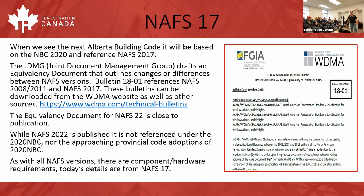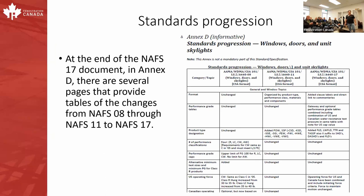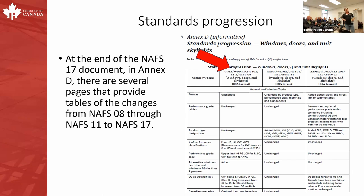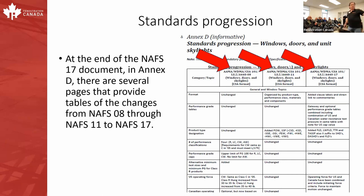With all NAFS versions there are component hardware requirements. What I'm talking about today is strictly out of NAFS 17 — there could be changes from 11 or 22, but 17 is the one that'll be referenced in the building code. Interestingly, the JDMG does equivalency documents, but at the back of NAFS there are actually standards progression tables. At the end of NAFS 17 in Annex D there are several pages with tables showing changes from version 8 through 11 through 17 so you can see exactly what changed.